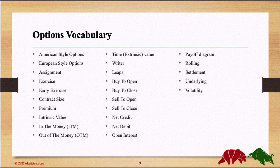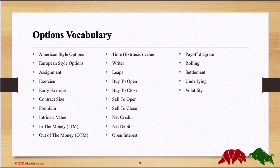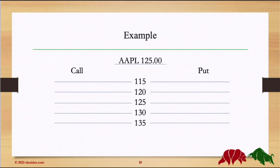Next is time value, also called extrinsic value. This is the difference between the intrinsic value and the premium at any point during the option's life. There is always time value until the last second the options trade. Time value equals zero when the option expires.